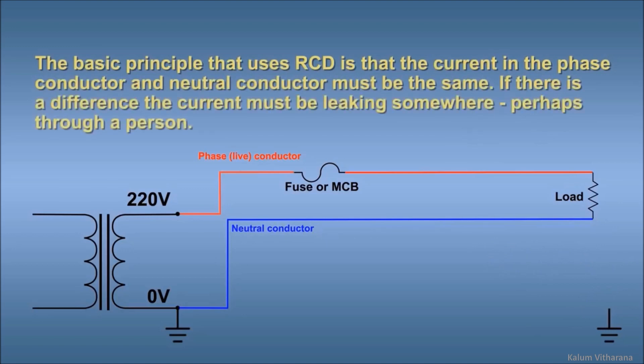The basic principle that an RCD uses is that the current in the phase conductor and neutral conductor must be the same. If there is a difference, the current must be leaking somewhere, perhaps through a person.